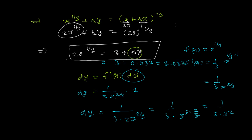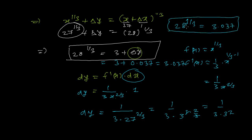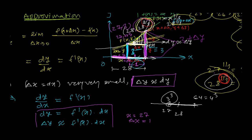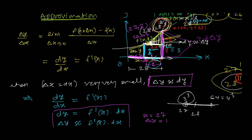So 28 to the power 1 over 3 equals 3 plus 0.037, that's 3.037. This is how we used derivative — we applied derivative to find the approximate value. This is the approximate value, keep in mind, not exactly equal. Approximately, 28 to the power 1 by 3 is 3.037. I just took a simple example, but later I will take a lot of examples so that you will feel easier to solve approximation problems using derivatives.